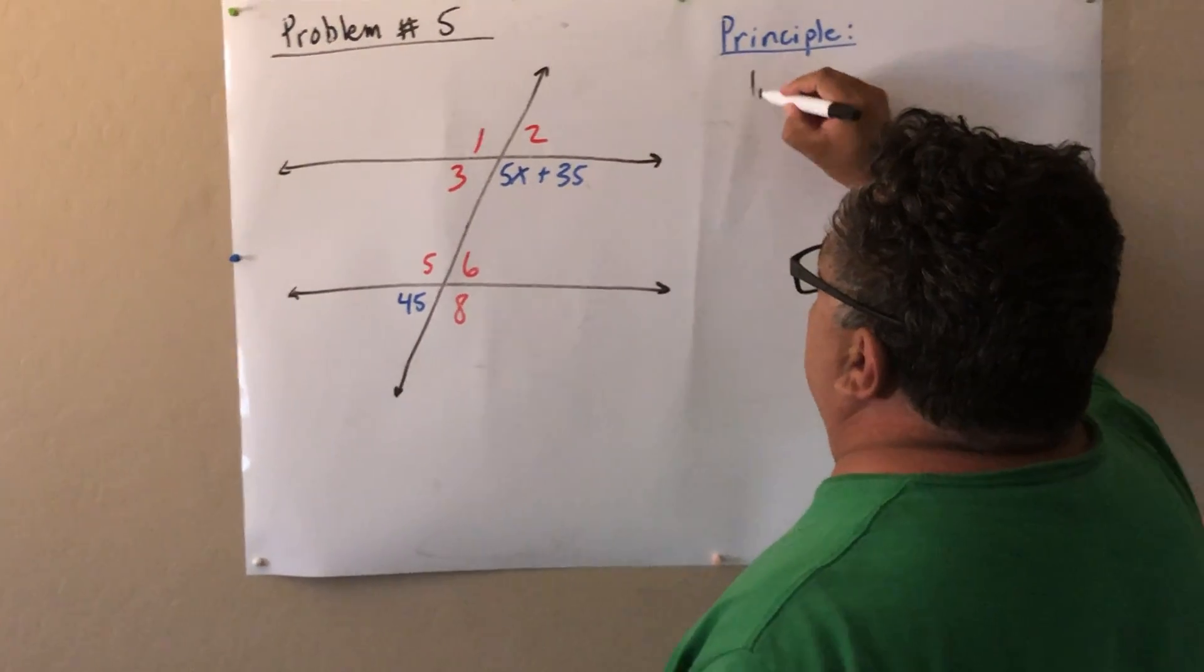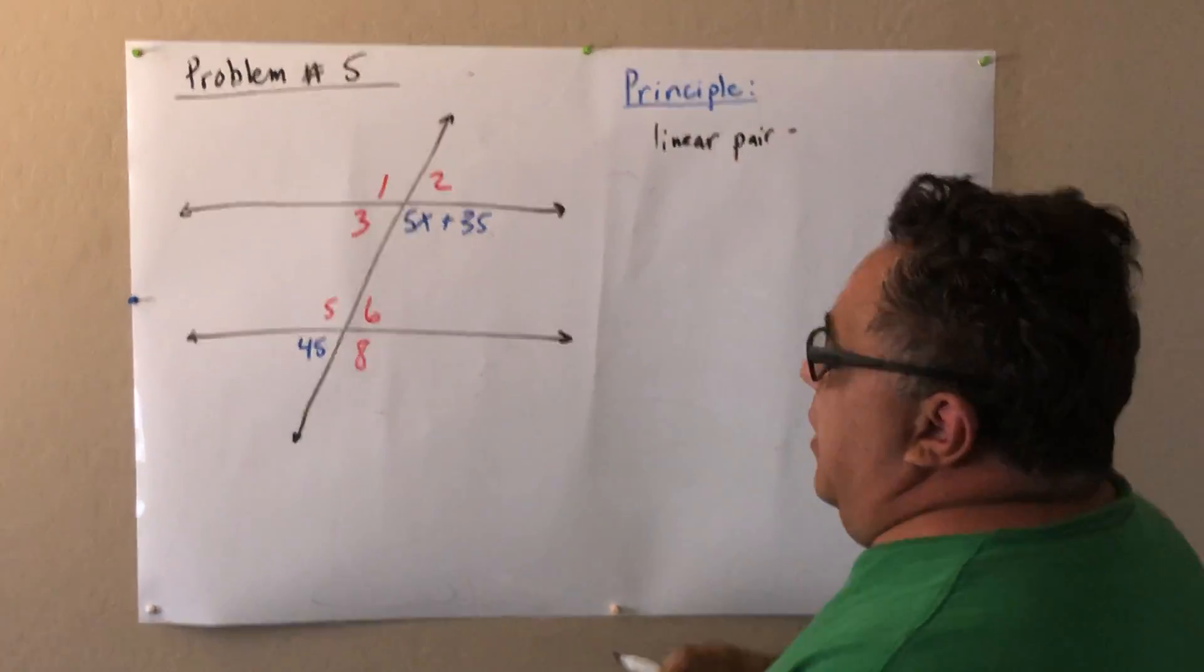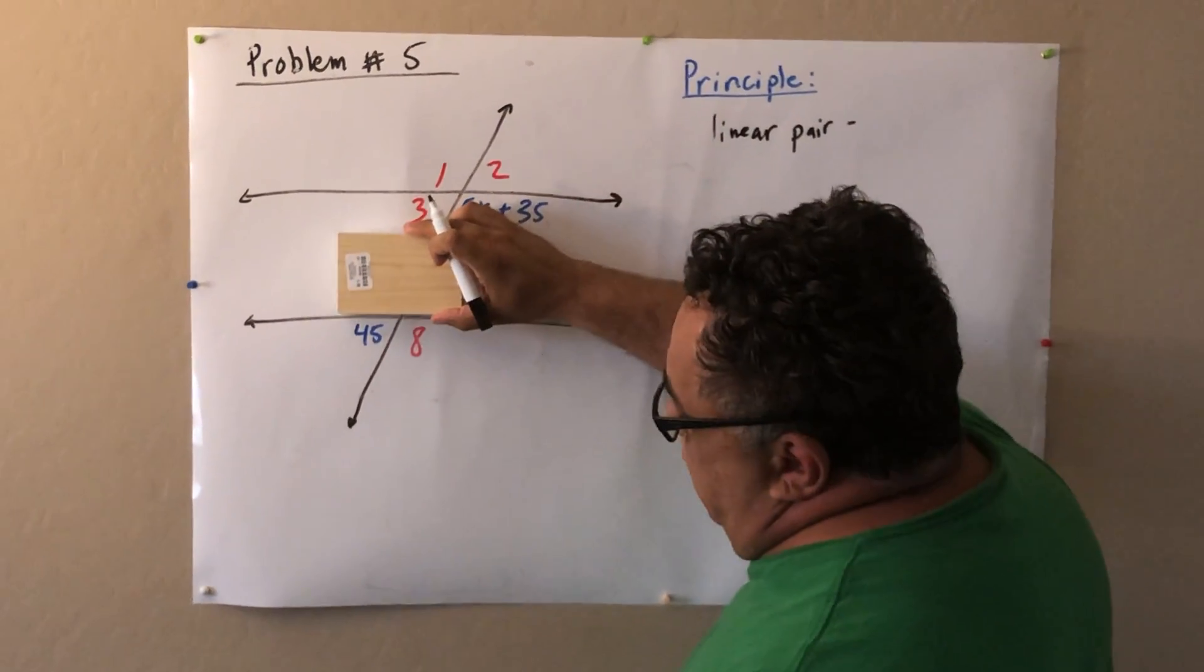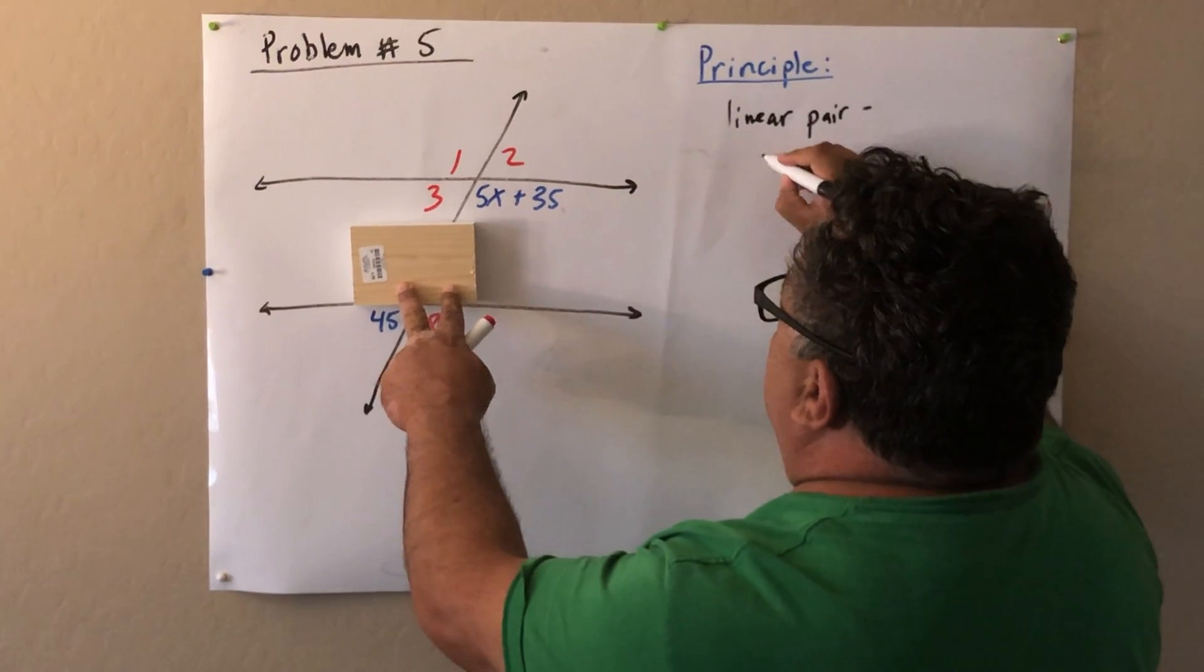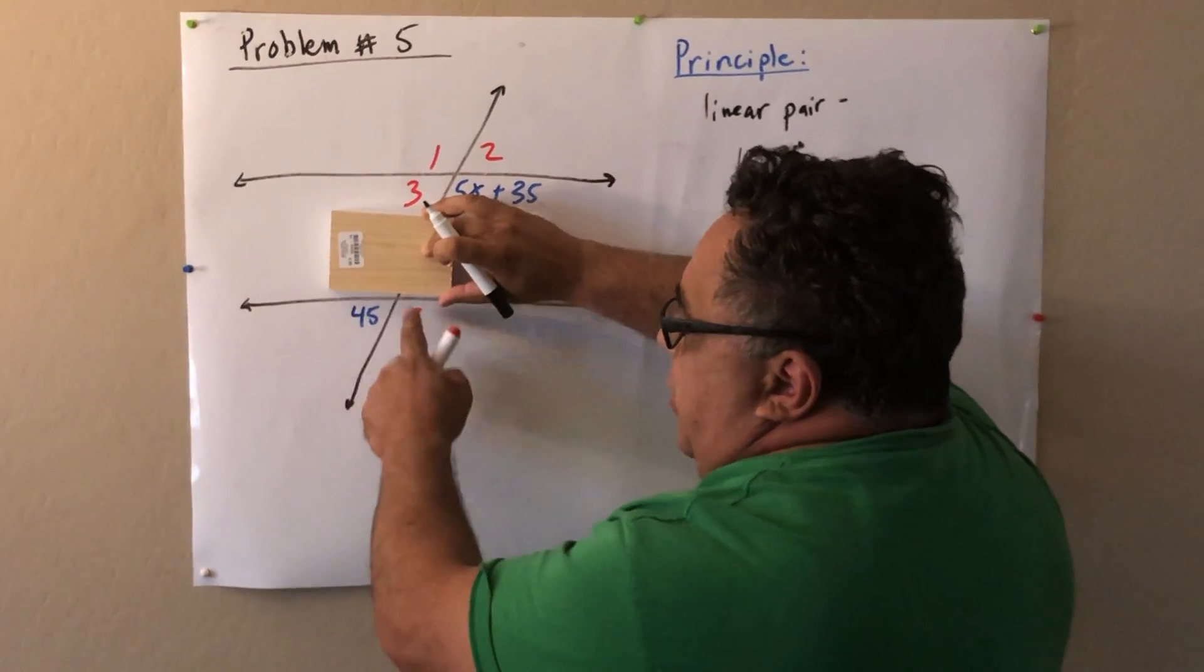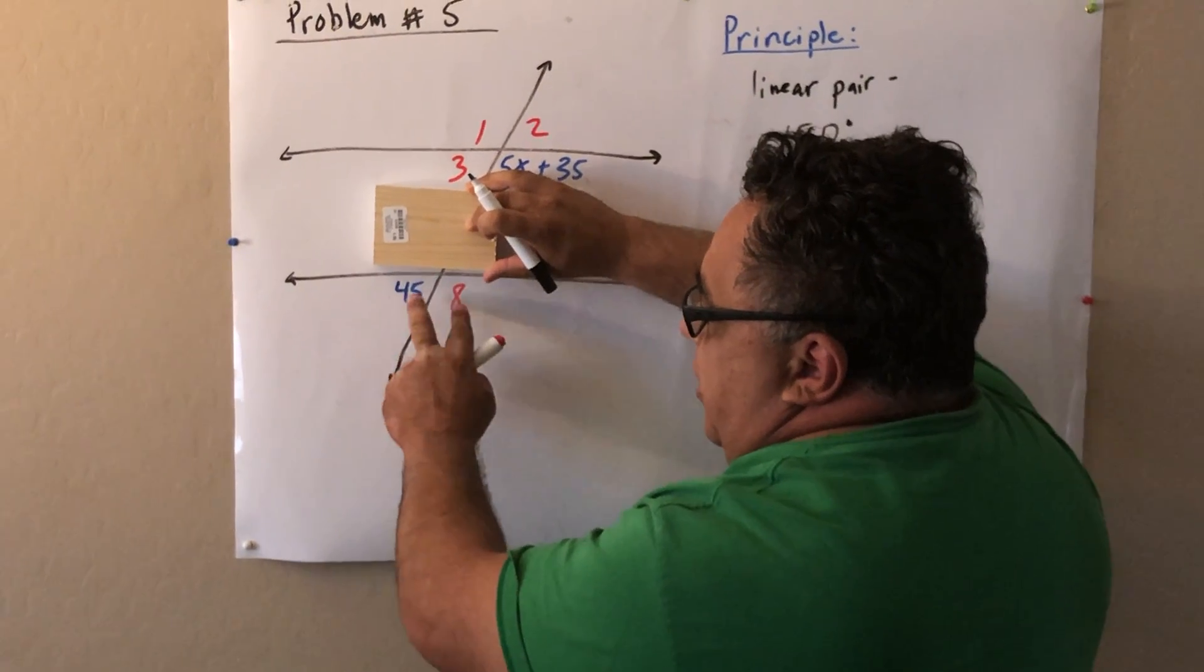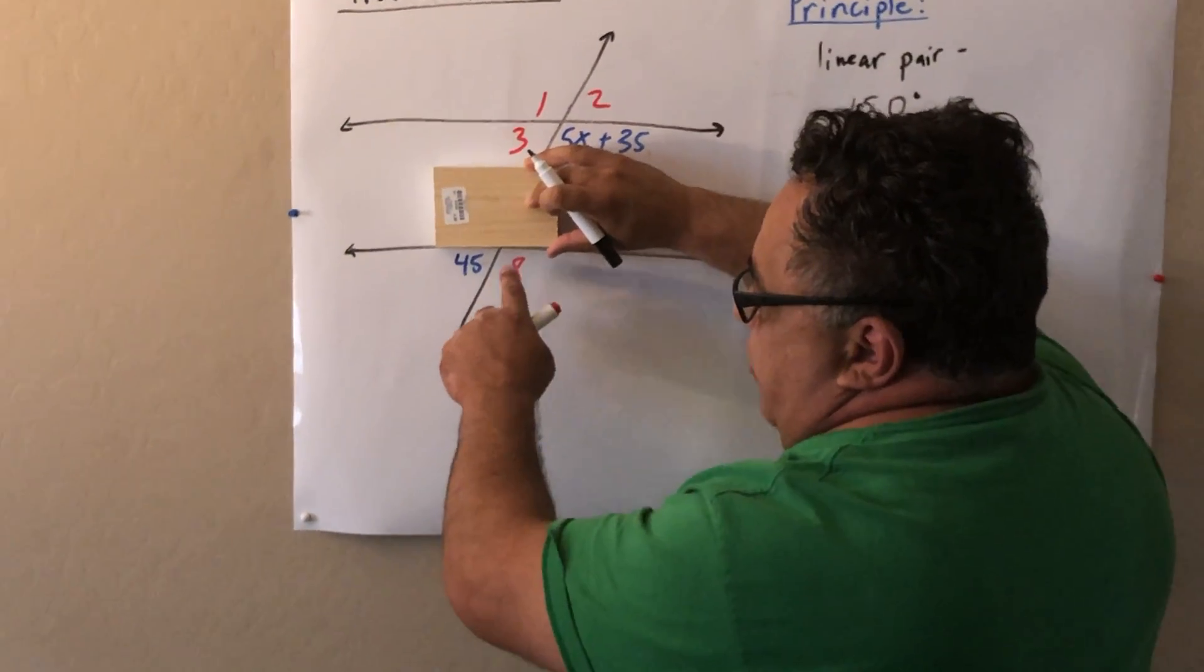We can use the principle called linear pair. Linear means line. Any two angles on a straight line is 180 degrees. A straight line is 180 degrees. And every time we see a straight line, there will be a line cutting it into two angles. It's called linear pair.